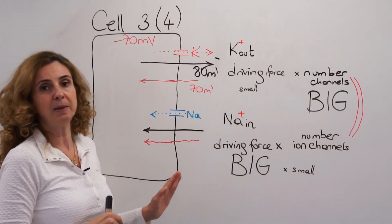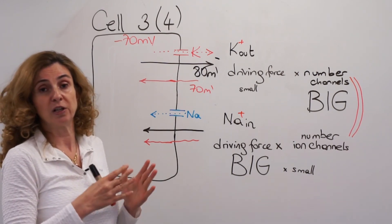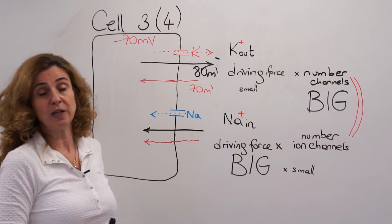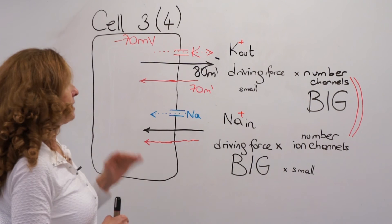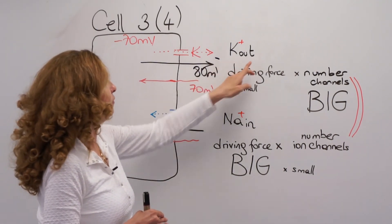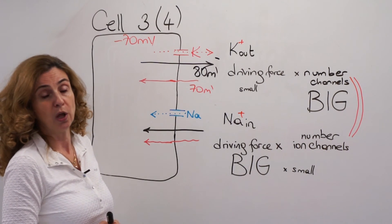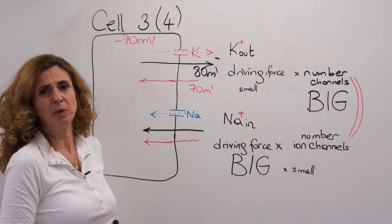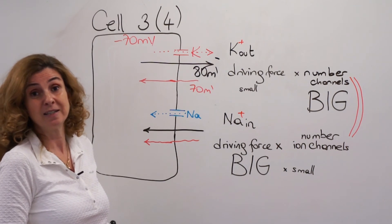There is a lot happening in this cell. Although sodium is continuously moving in and potassium continuously moving out, the resting membrane potential is constant. This is because the total number of ions moving in and out — and the charges they carry — are equal. So the resting membrane potential is constant, but behind this constant potential, a great deal is happening.